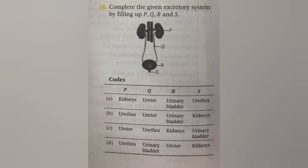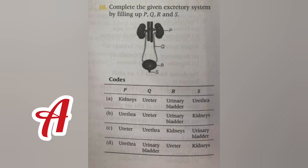Next, complete the given excretory system and fill in P, Q, R, S. The answer is A: P — Kidney, Q — Ureter, C — Urinary bladder.